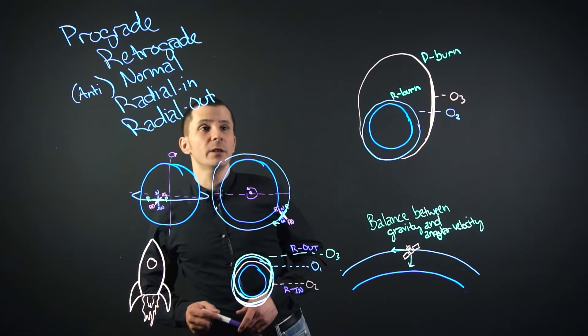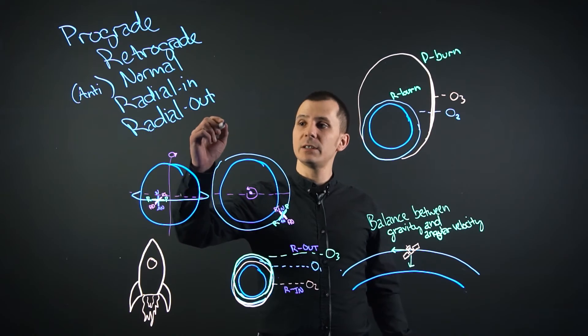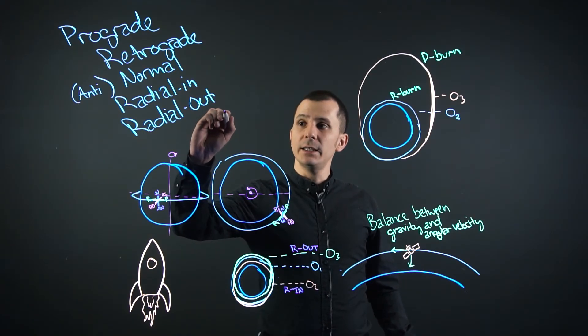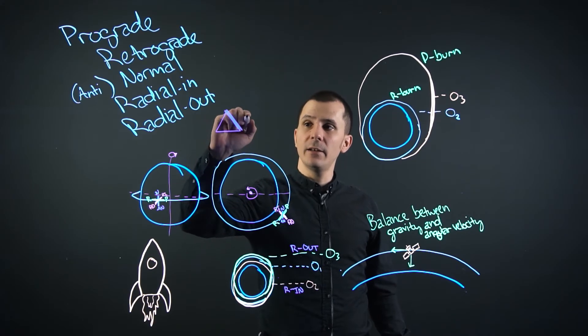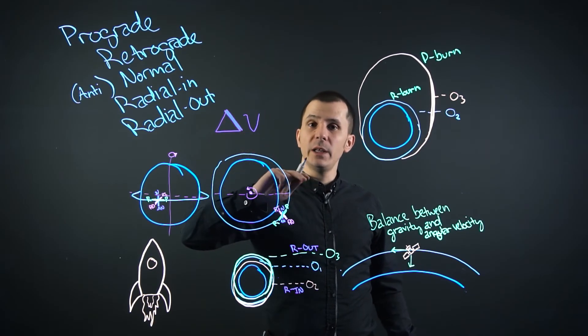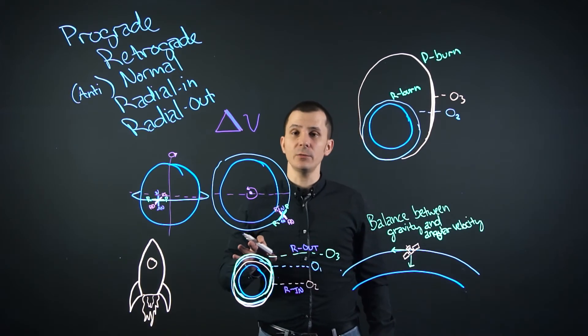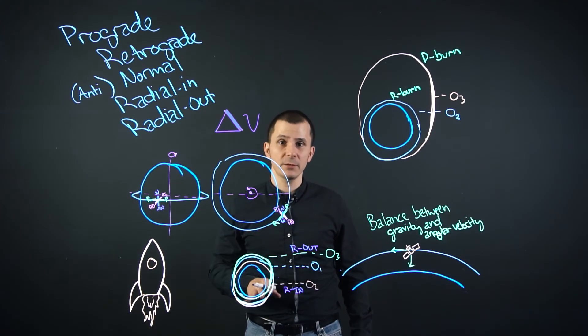And of course, we can quickly cover delta v so that you understand what that is. Delta is the change in something, and v being the velocity. You'll hear this in regards to rockets and various other spacecraft.